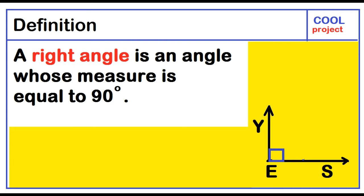A right angle is an angle whose measure is equal to 90 degrees. The blue square represents a 90 degree angle. The measure of angle YES equals 90 degrees.